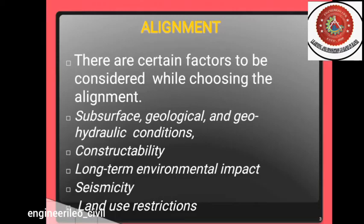Alignment. There are two types of alignment of tunnel. First is horizontal alignment and second is vertical alignment. Horizontal alignment means the line that runs to the center of the tunnel, and vertical alignment means the line that runs and changes in elevation of the tunnel.